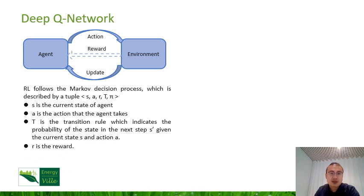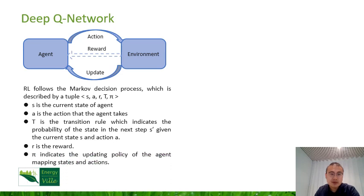R is a reward. When the state is updated, a reward is given to the agent accordingly. Based on rewards, the agent optimizes its action scheme. And Pi indicates the updating policy of the agent, mapping states and actions. After training, reinforcement learning gets an optimal policy, which can make the agent update towards the way of getting the optimal rewards.